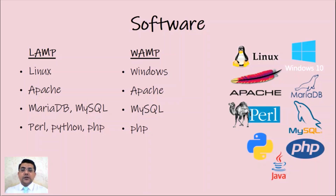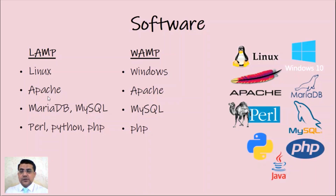LAMP is an abbreviation of Linux, Apache, MySQL or MariaDB, and Perl, Python, or PHP. WAMP is an application for Windows — it includes Apache, MySQL, and PHP. Linux is one of the operating systems, Apache is the web server, MariaDB or MySQL are the databases, and Perl, Python, and PHP are scripting languages.